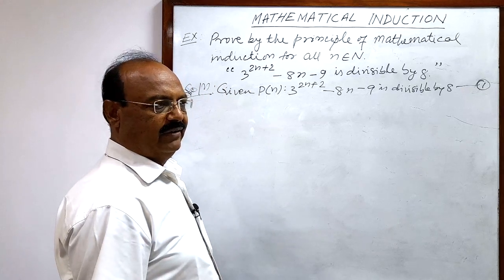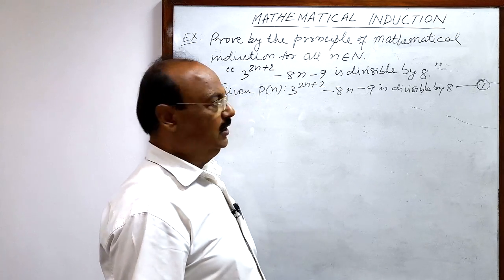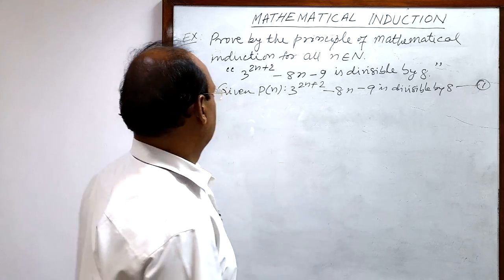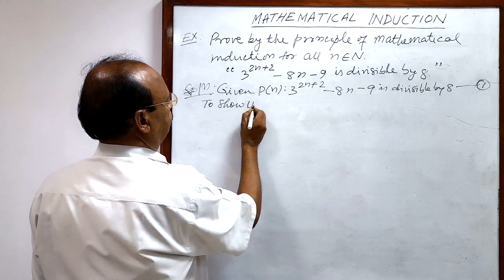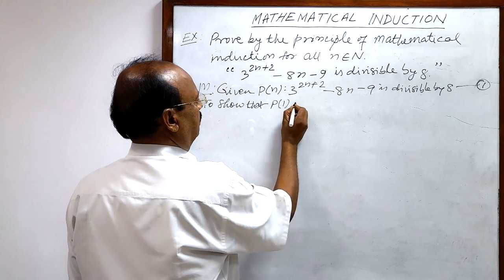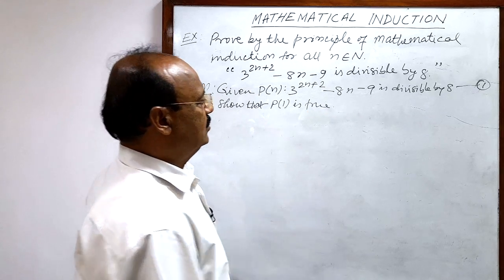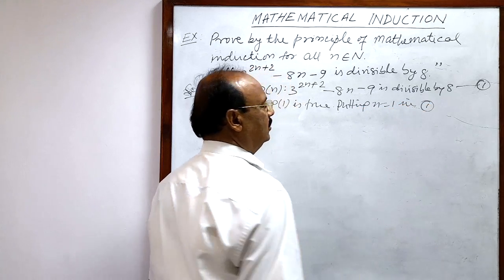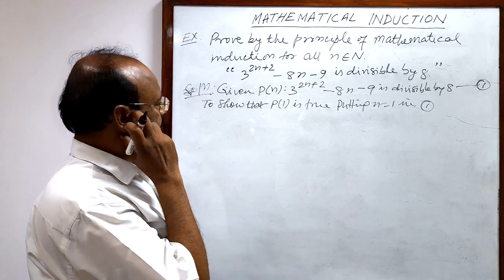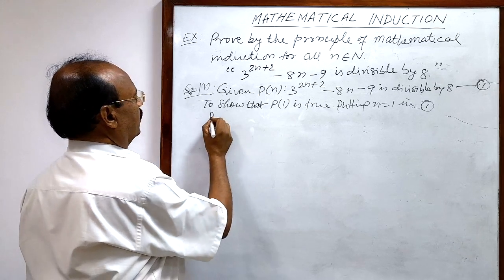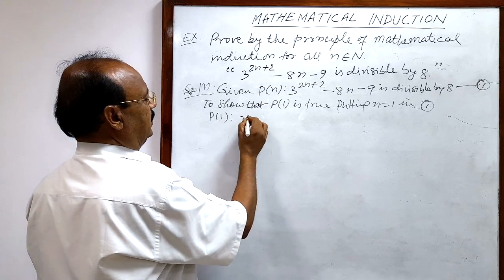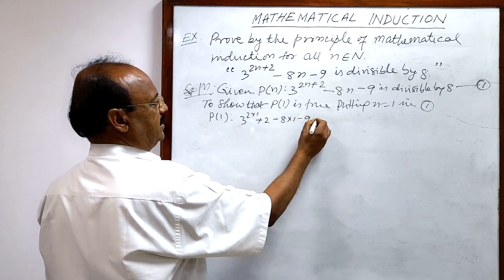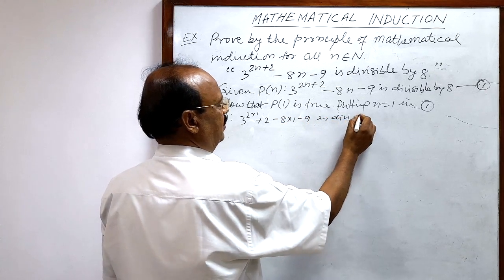The first step for the principle of mathematical induction is to show that P(1) is true. We get P(1) by putting n equal to 1. So P(1) is: 3 to the power 2 into 1 plus 2 minus 8 into 1 minus 9 is divisible by 8.